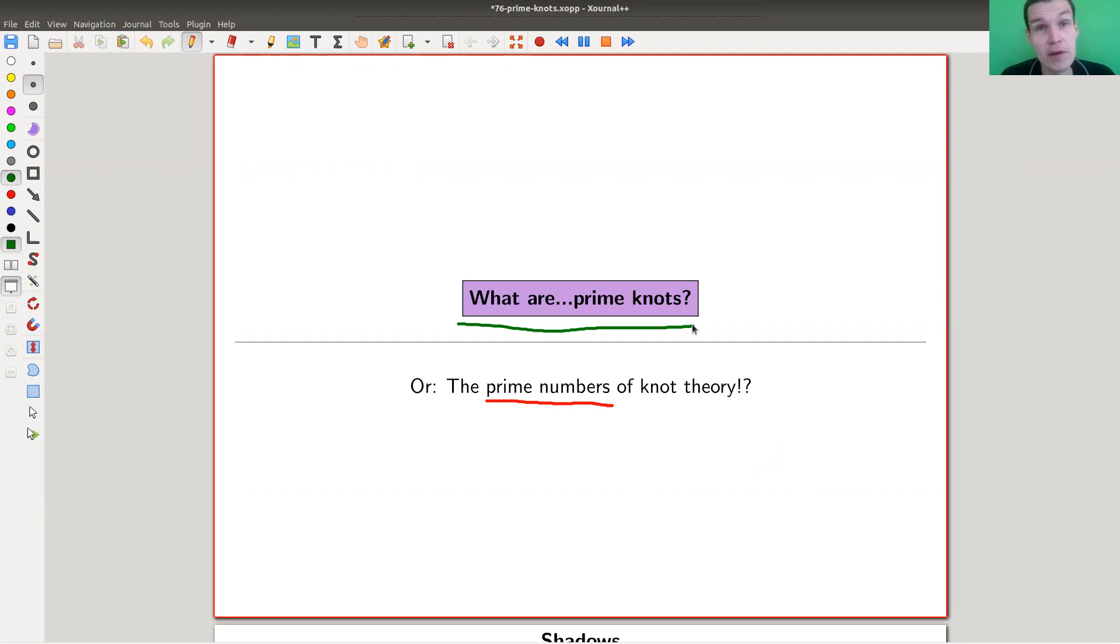So why are prime numbers so famous, so popular? That's a good question. I actually don't know the answer. Anyway, there's a very basic number theoretical reasoning why they are at least important in certain branches of basic number theory, which would be the fundamental theorem of arithmetic. So everything can be factored in primes, and primes are the basic building blocks, and factorization is essentially unique.